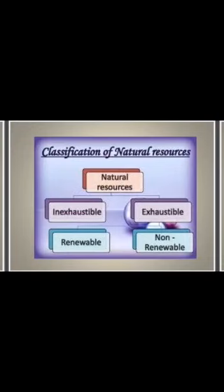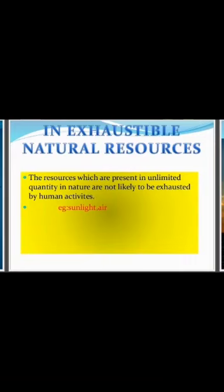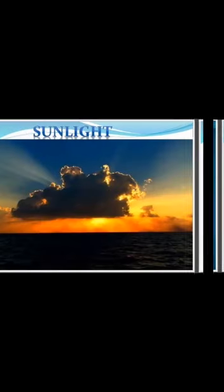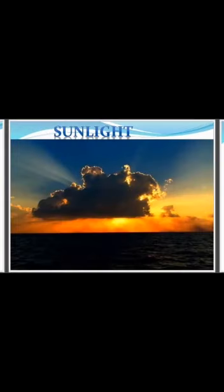Natural resources are classified into two categories: inexhaustible natural resources and exhaustible natural resources. The resources which are present in unlimited quantity in nature and are not likely to be exhausted or finished by human activities are called inexhaustible natural resources. For example, sunlight, air, water, etc.